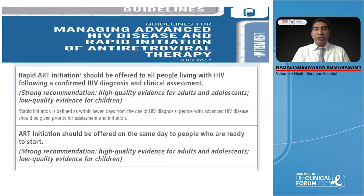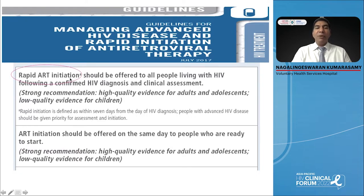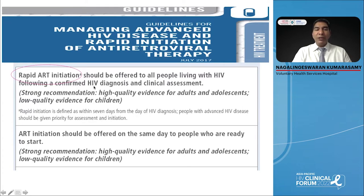We have guidance from WHO: when someone presents to care with any symptoms of HIV, you should look for opportunistic infections, diagnose and manage them, start treatment, then start antiretroviral therapy. The time duration should be around seven days — start anti-opportunistic infection drugs, stabilize the patient, then start ART, what is called rapid ART initiation. For someone who has CNS manifestations like cryptococcal meningitis, toxoplasmosis, or TB meningitis, you can delay ART initiation up to six weeks to prevent immune reconstitution syndrome. In all other conditions, initiate antiretroviral drugs within seven days.